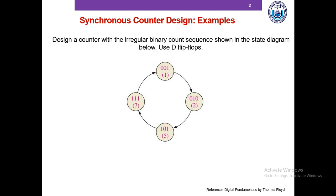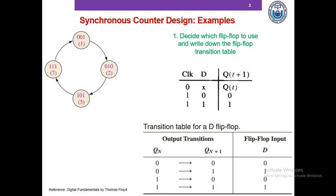At first we'll try to design a counter using D flip-flops that counts an irregular sequence: 1, 2, 5, 7. Here we're trying to design a 3-bit counter, so we already know that we require 3 D flip-flops which will be clocked by the same clock. So the first step of synchronous counter design is to decide which flip-flop we're going to use and write down the transition table.